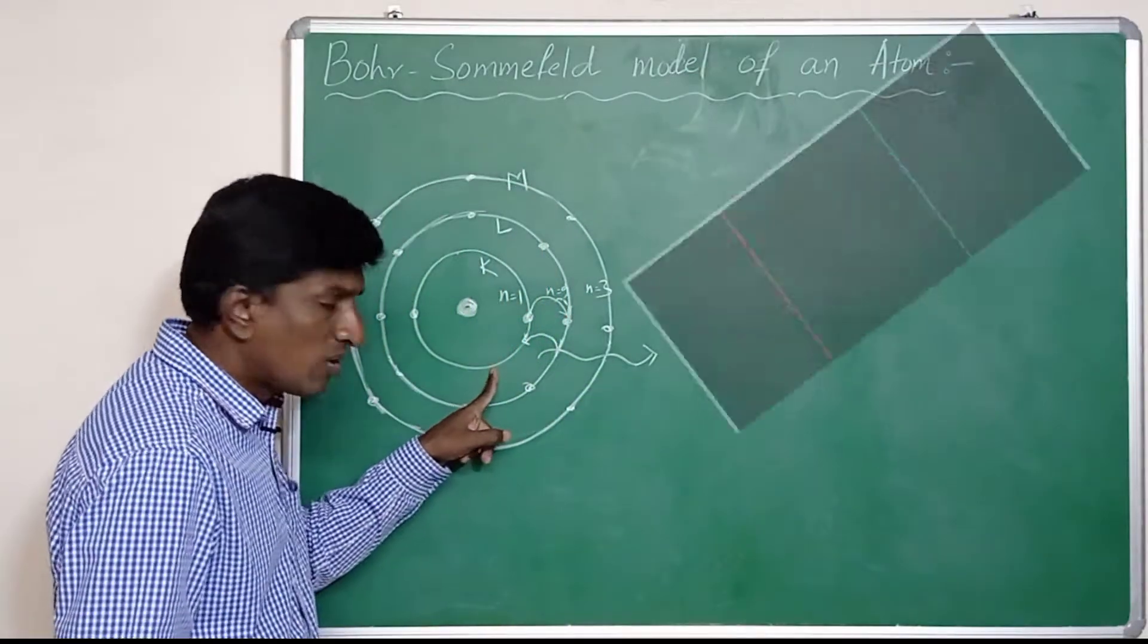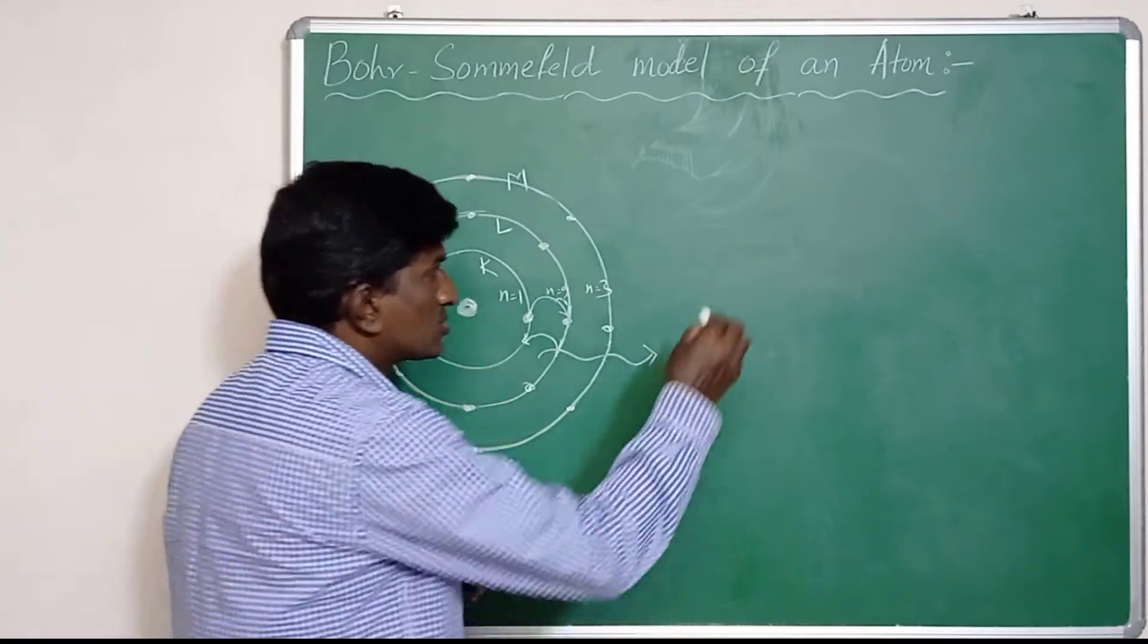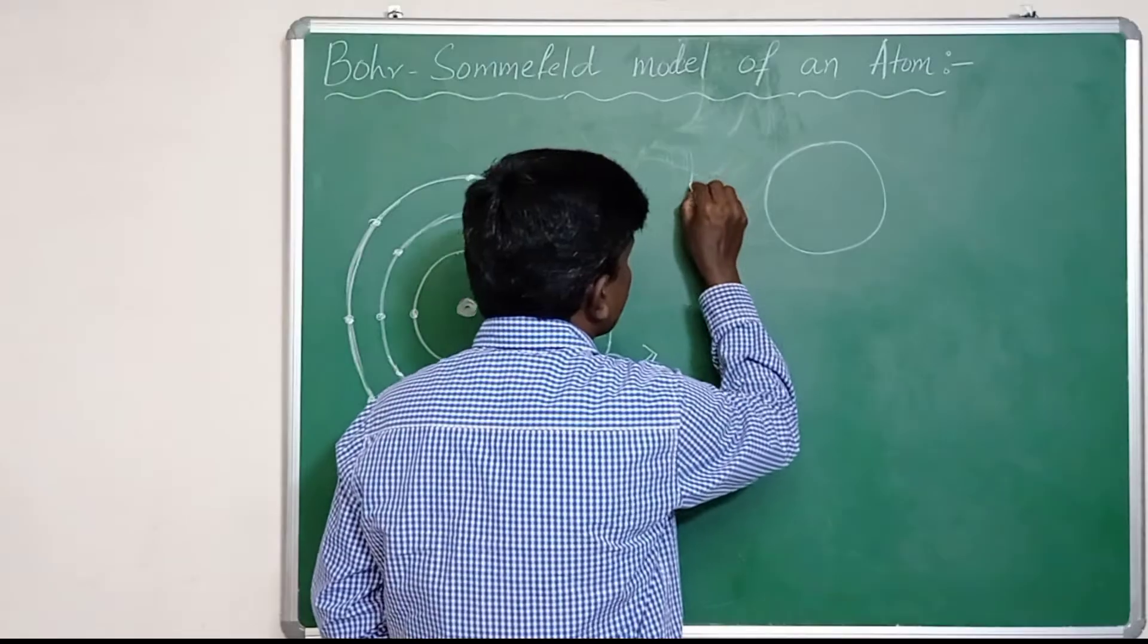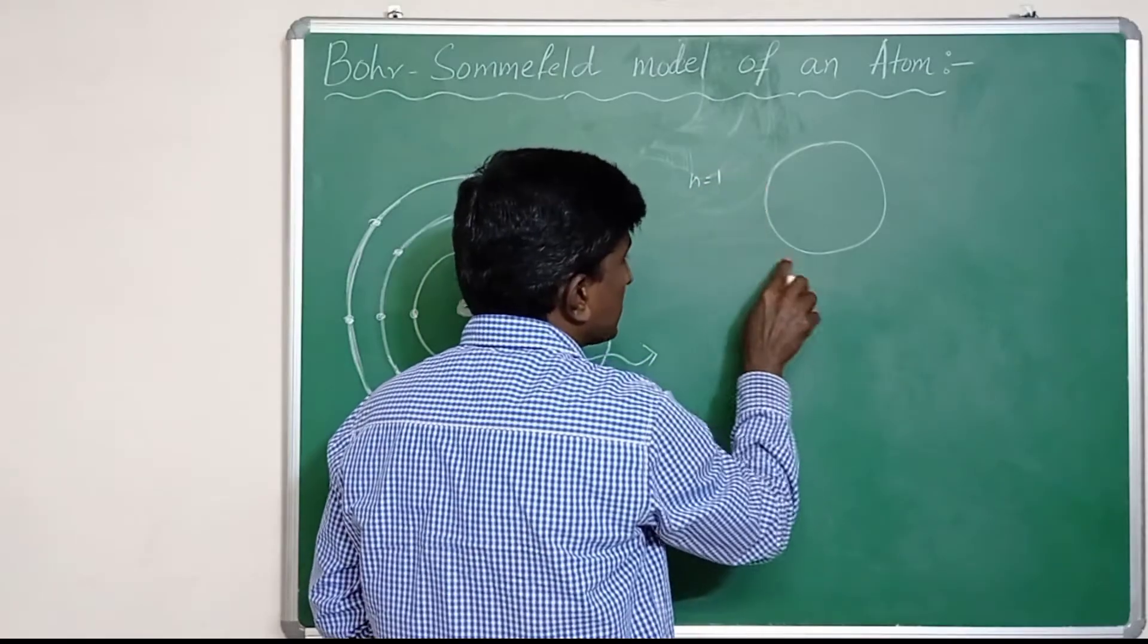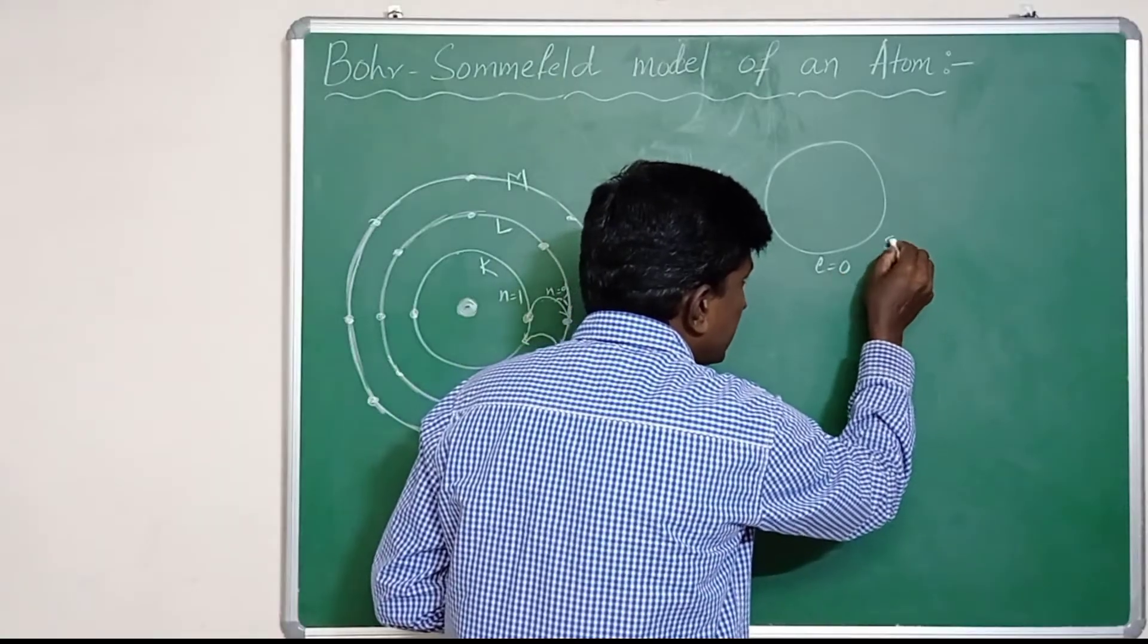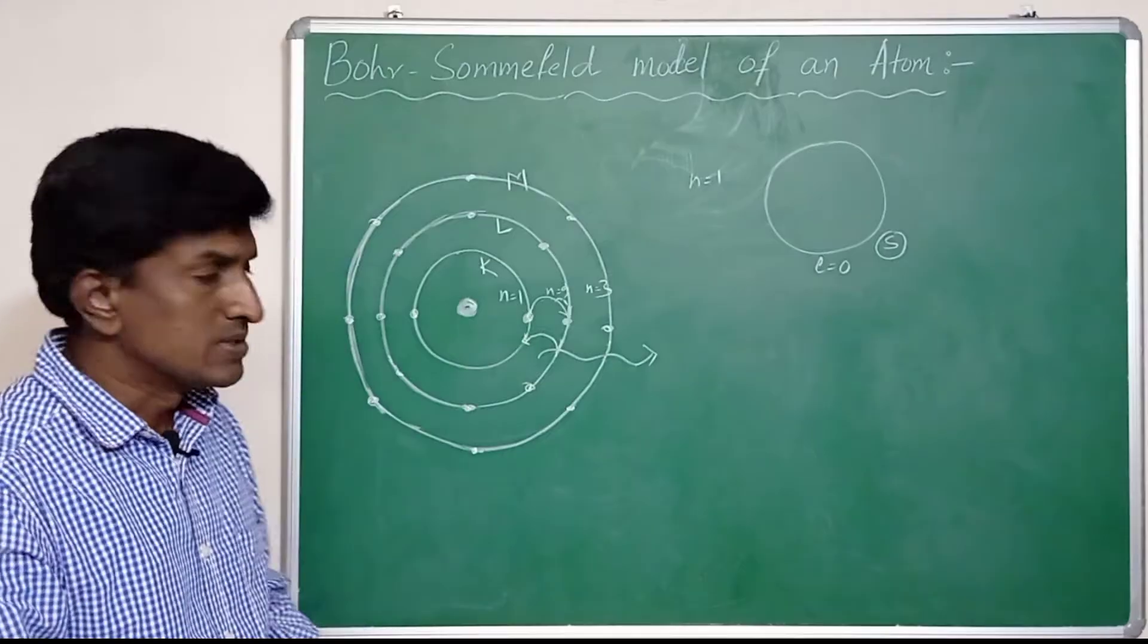So n equal to 1, and here l equal to 0. If l equal to 0, then it is said to be s subshell. The first orbit of Bohr is as it is circular; there is no splitting in the first Bohr orbit.